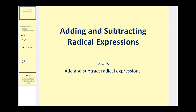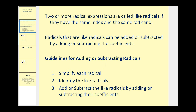Welcome to adding and subtracting radical expressions. Two or more radical expressions are called like radicals if they have the same index and the same radicand. Radicals that are like radicals can be added or subtracted by adding or subtracting the coefficients. This works very similar to how we combine like terms, but now we're dealing with like radicals.